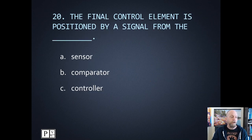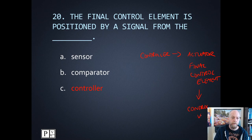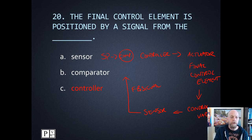Number twenty: the final control element is positioned from a signal from... The final control element is the actuator, which is sent a signal from the controller — the building automation system or PLC. The controller sends a signal out to the actuator, and the actuator — another name for it is the final control element — ultimately controls our control variable. You should be able to quickly draw out this block diagram: the sensor sends the feedback signal to the comparator, and the set point goes in there as well.